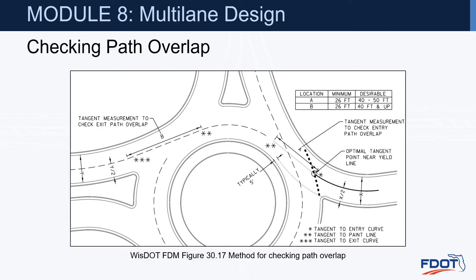How do we check for path overlap? From the Wisconsin Department of Transportation's FDM, by providing a tangent between the entry and circulatory roadway with dimensions of 26-foot minimum or 40 to 50-foot desirable. For multi-lane designs with two-lane entry and two-lane circulating, we provide that tangent, extending it typically to the tangent point near the yield line, or a little further back into the entry. The same approach applies on the exit — we want to provide a section of tangent between the two curves.